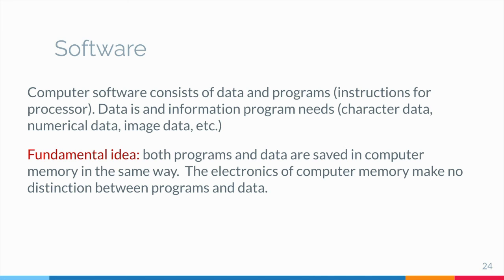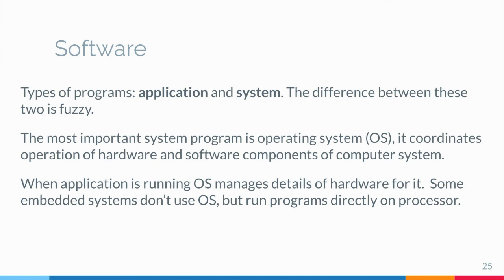Types of programs. There are two categories of programs. Application programs, usually called just applications, are programs that people use to get their work done. Computers exist because people want to run these programs. System programs keep the hardware and software running together smoothly. The difference between application programs and system programs is fuzzy.